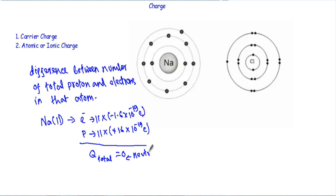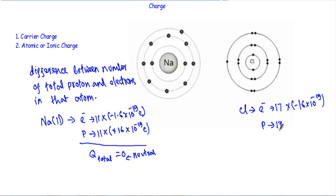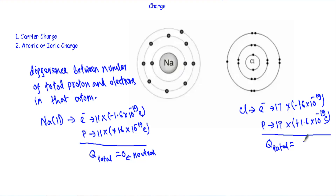Now consider chlorine. Chlorine has an atomic number of 17, so it has 17 electrons and 17 protons. The 17 electrons give a charge of −17 × 1.6 × 10⁻¹⁹ Coulombs, and the 17 protons give +17 × 1.6 × 10⁻¹⁹ Coulombs. The total positive and negative charges are equal, so Q total = 0 — chlorine is also charge neutral.